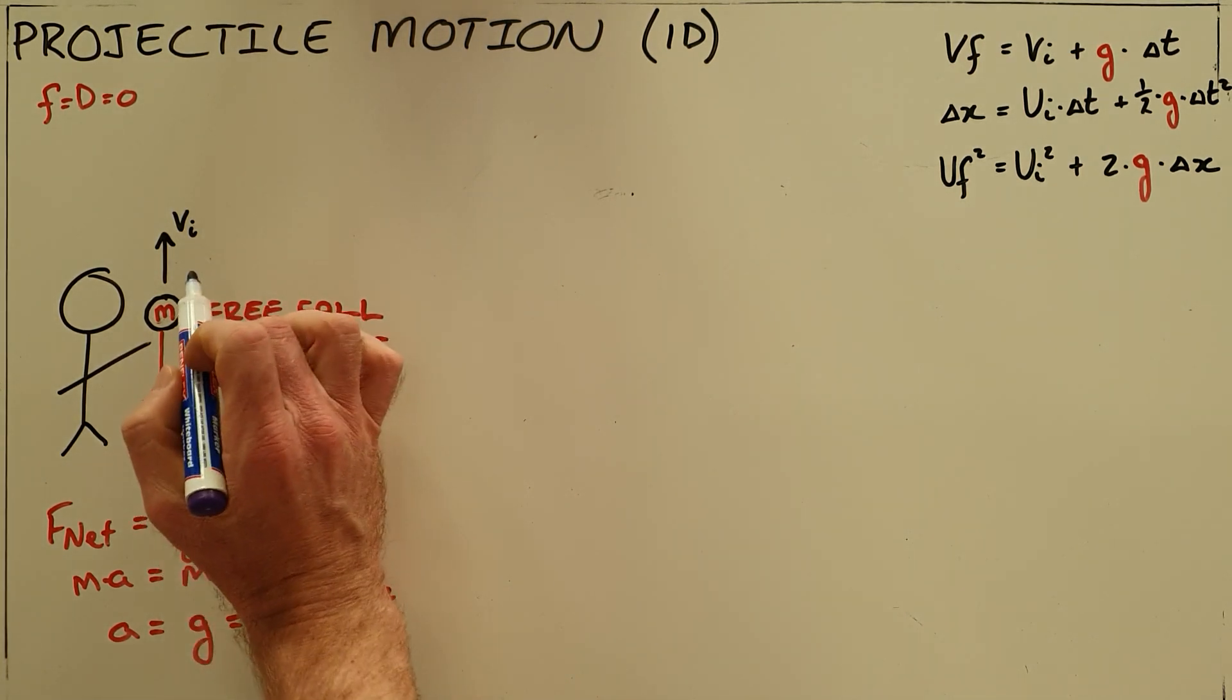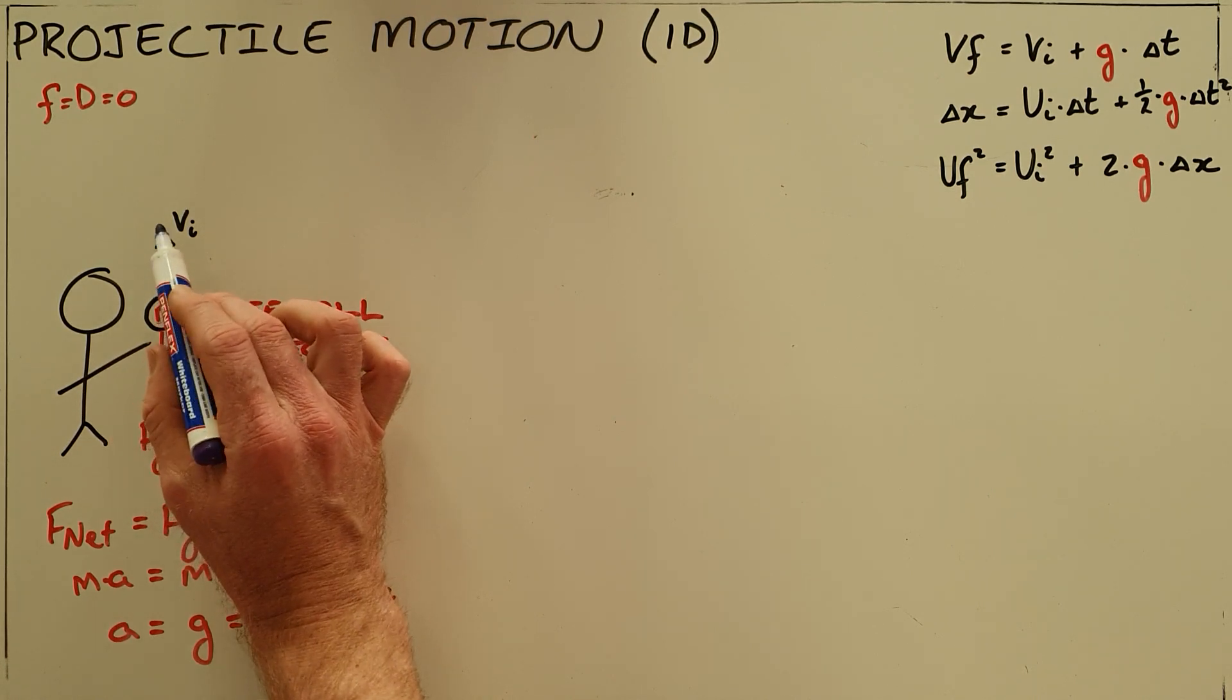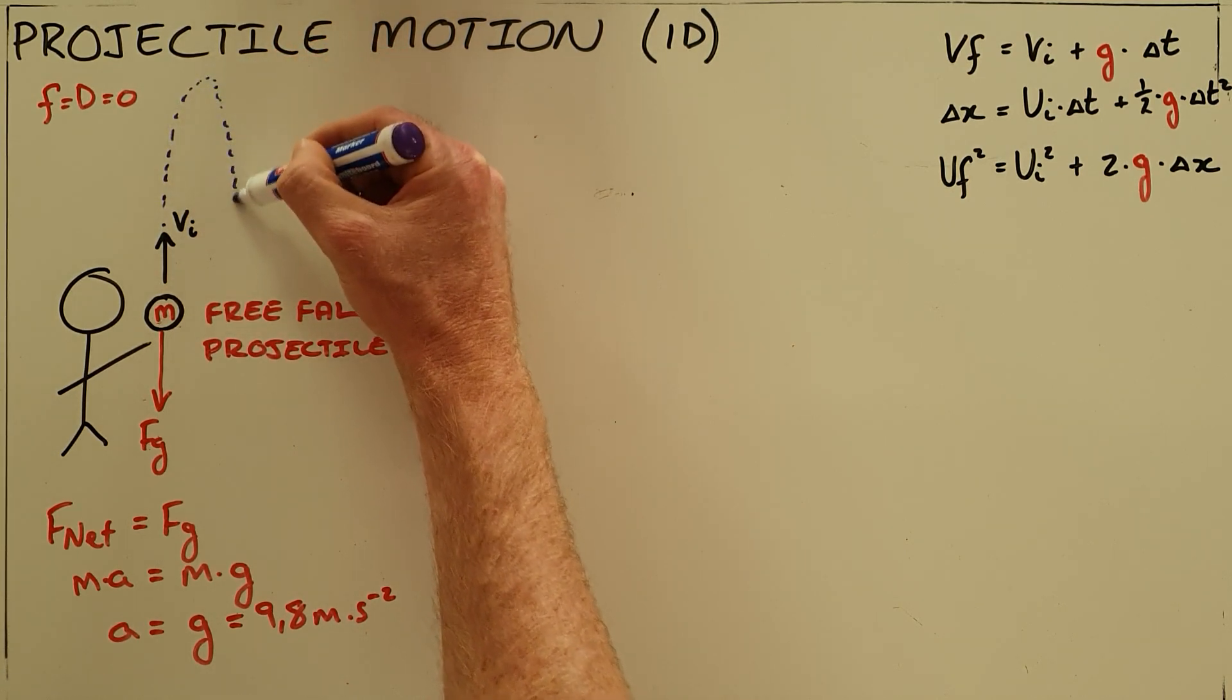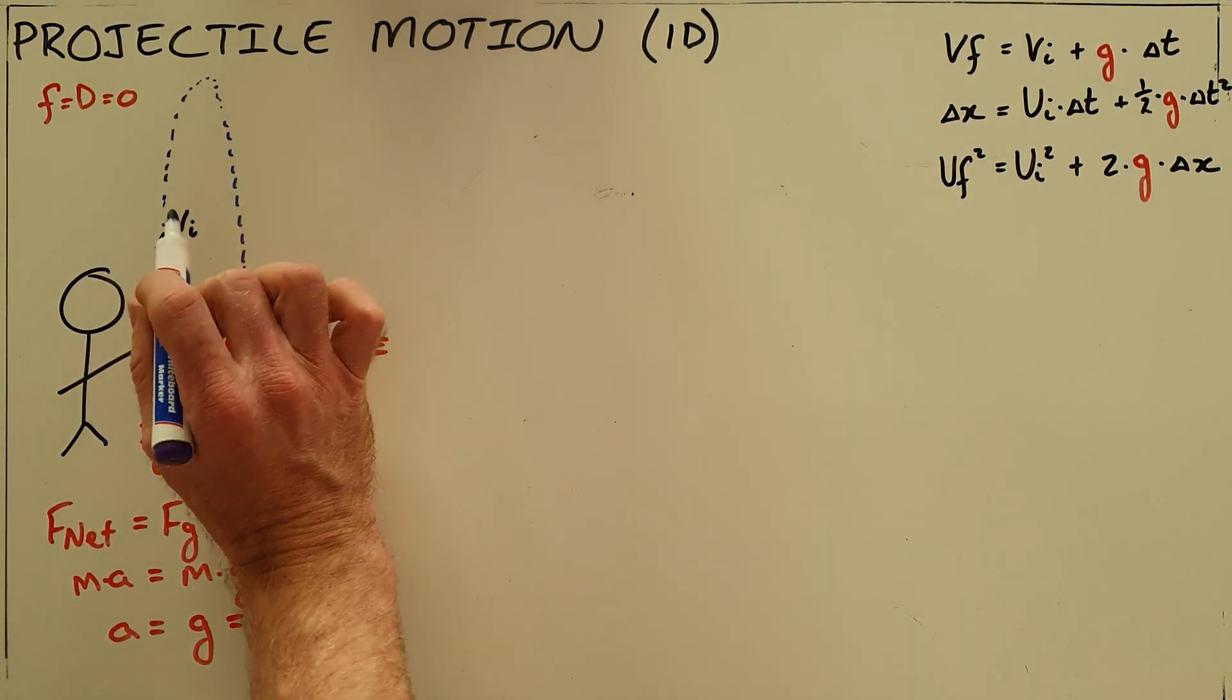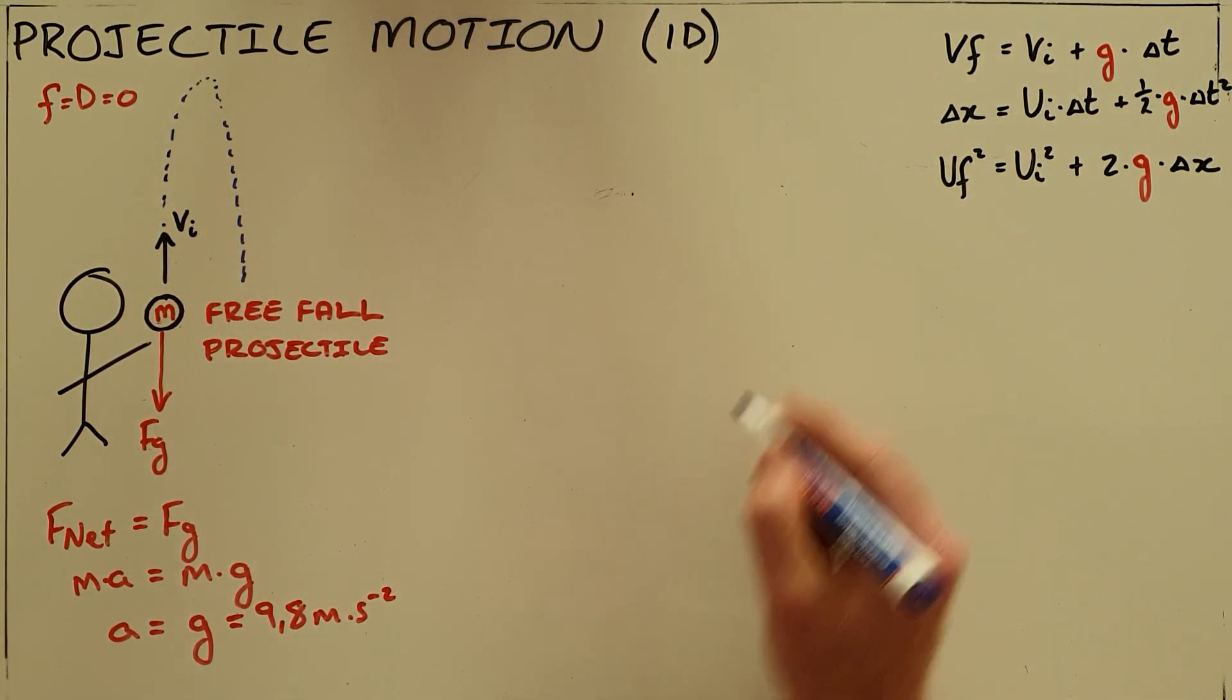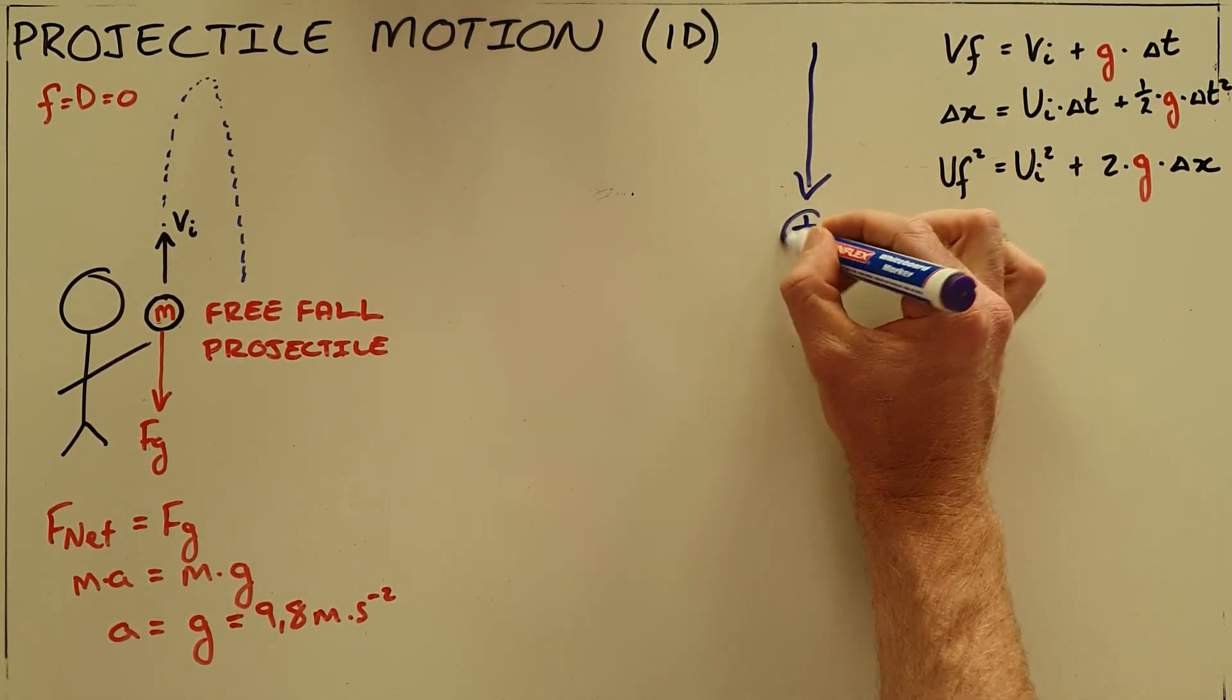When we throw an object upward, it has an initial velocity upward. This object would typically travel upward until it reaches a maximum height, then start traveling downward again, and the velocity would constantly change. Because it's possible to travel in two directions here, it is important for us to define a reference direction—a direction that we define as positive.